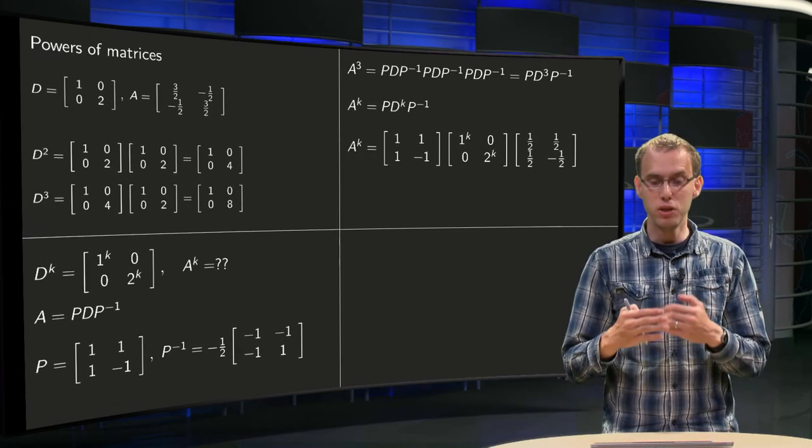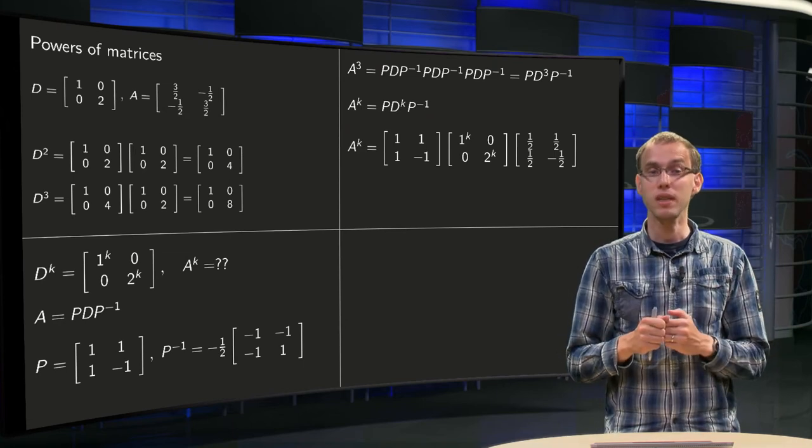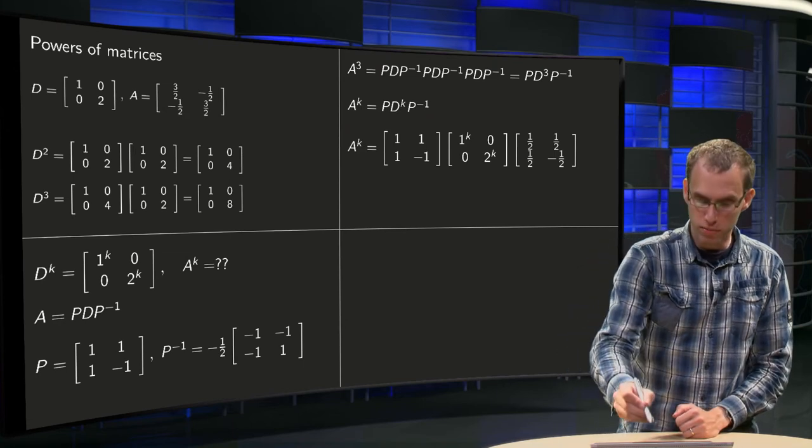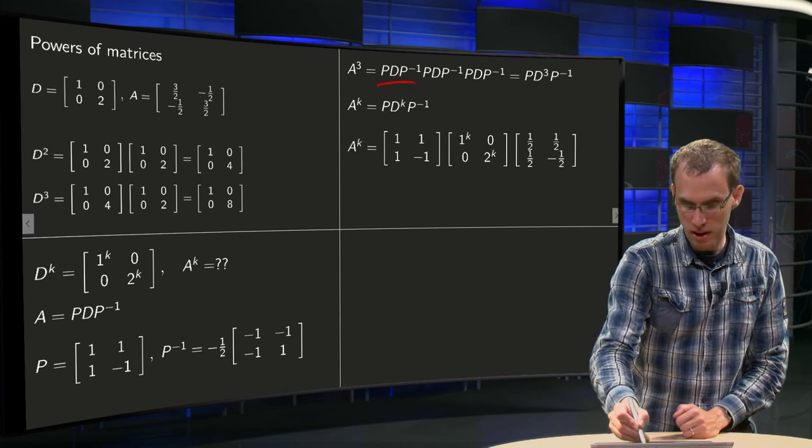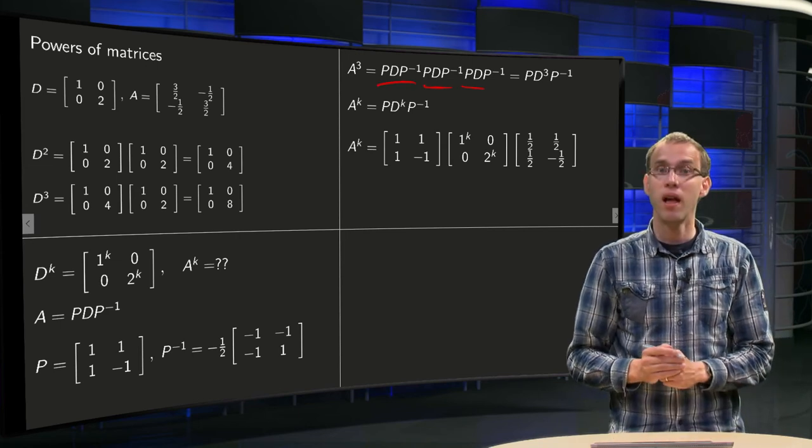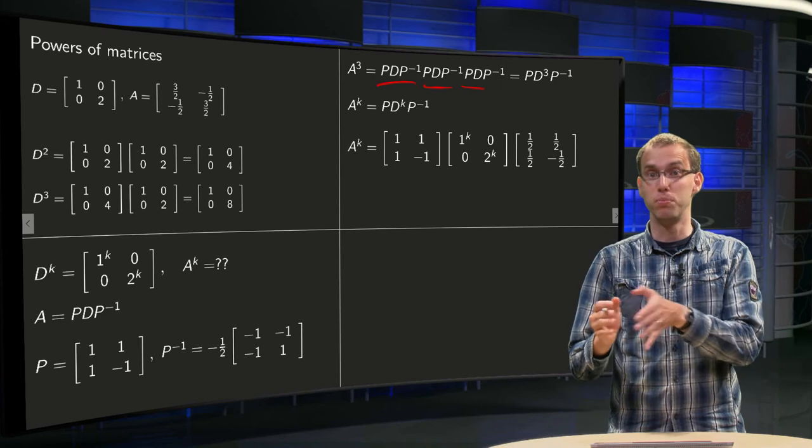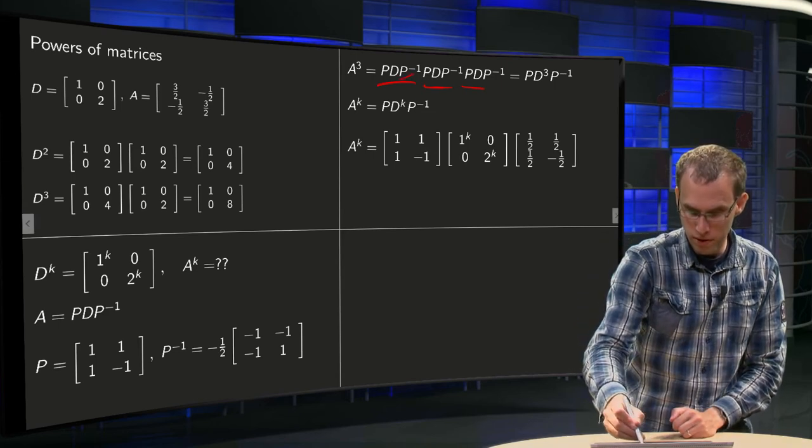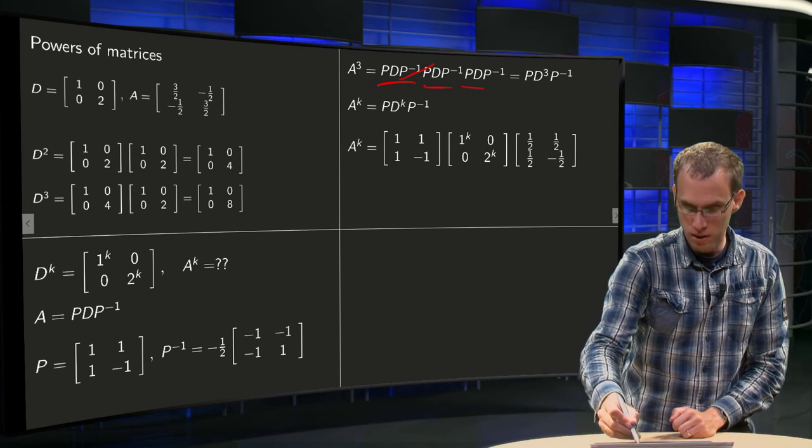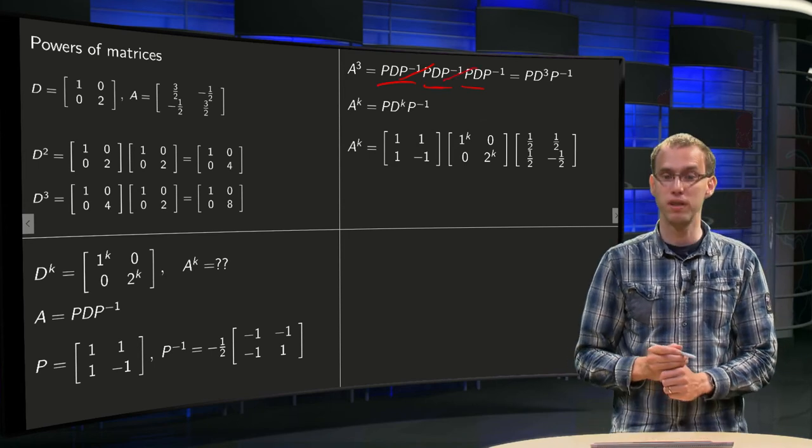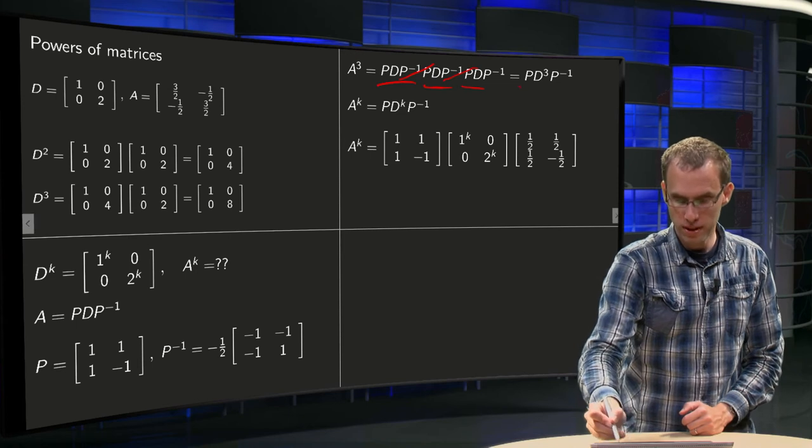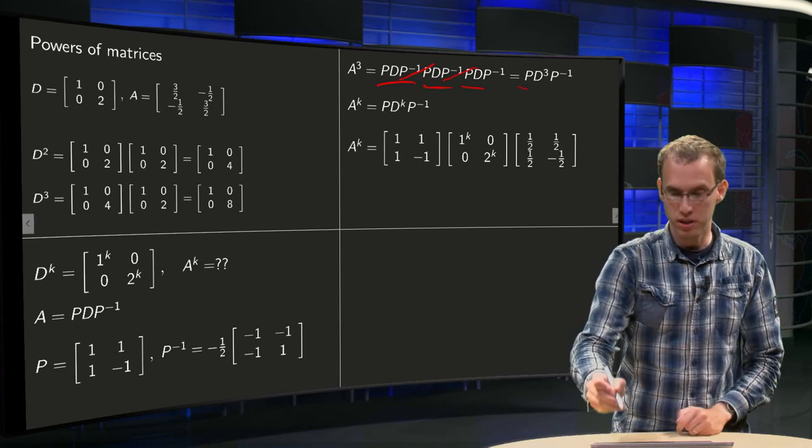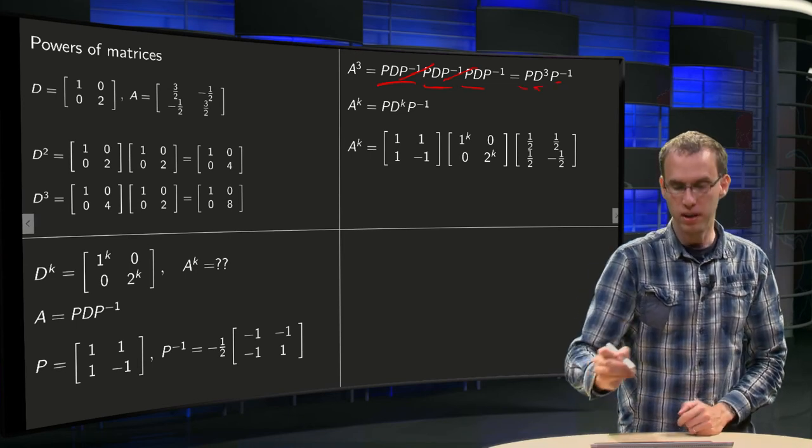And how can we use this to compute, say for example, A cubed? Well, A cubed would be A times A times A, PDP inverse, PDP inverse, PDP inverse, and now you see something nice happens. Those P inverse and P cancel out, those P inverse and P cancel out, so we are left with the first P, the D times D times D, so the D cubed, and the P inverse.